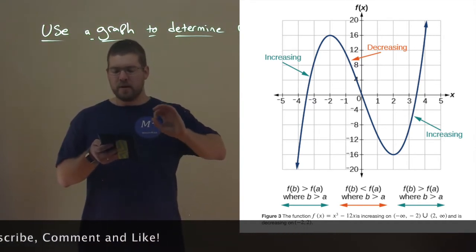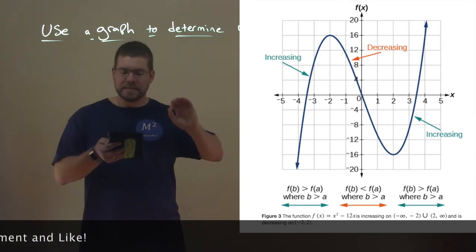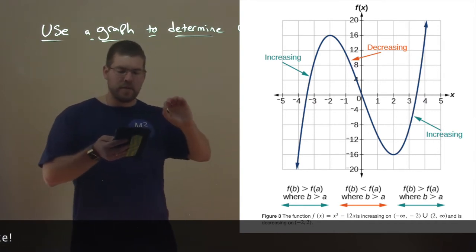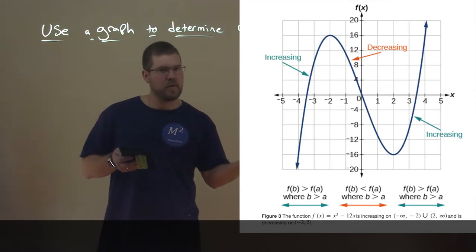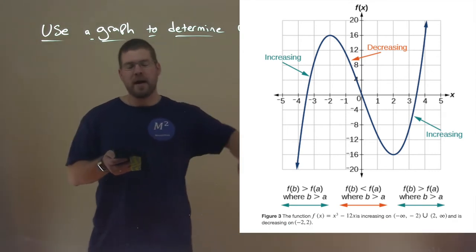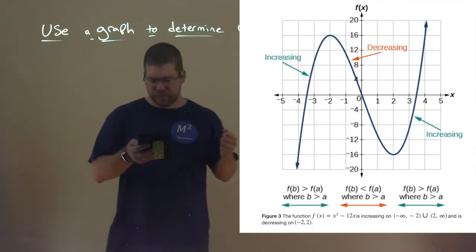The interval where it's increasing, we can see that there. The first part, then it hits a peak, then turns back around and comes decreasing. Then it hits another valley and goes back up to be increasing.